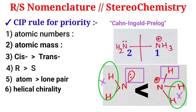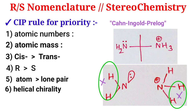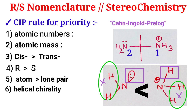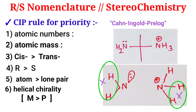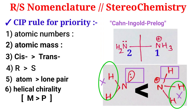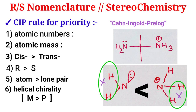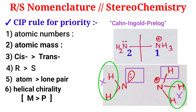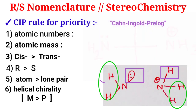Rule number six is the nomenclature for helical molecules — helical chirality. These are also chiral molecules but their representation is different. The designation is M and P, and the priority order is M greater than P, meaning M configuration gets higher priority than P configuration.